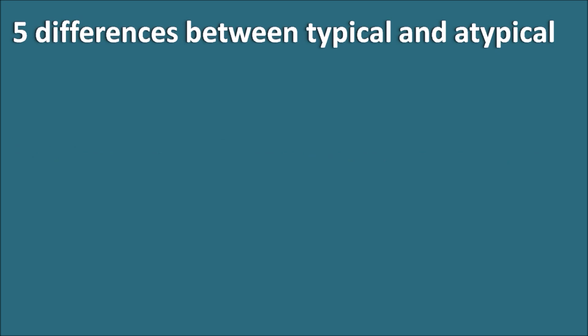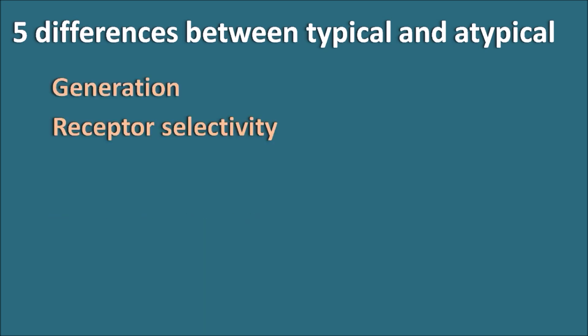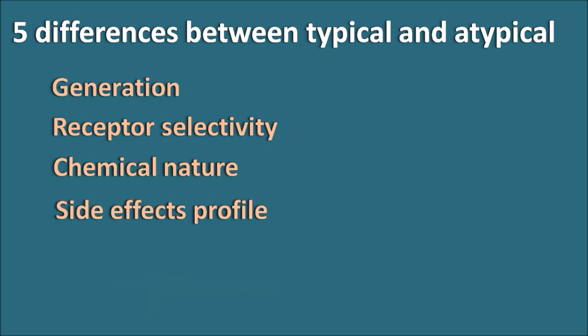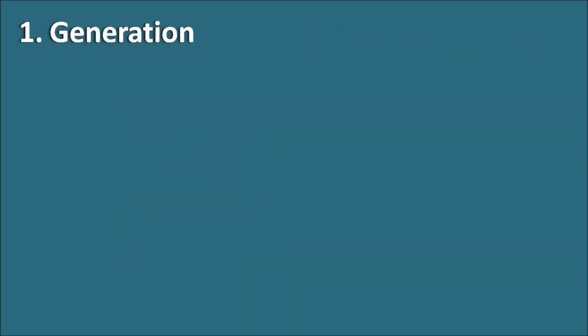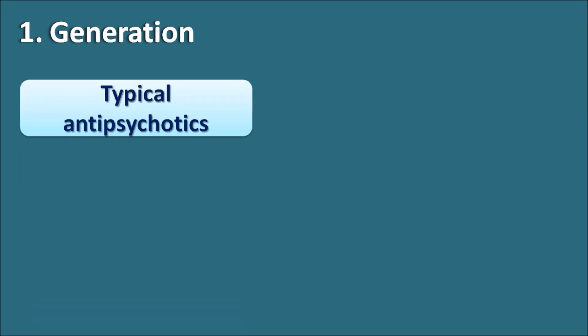Now let us see the five differences between typical and atypical antipsychotics. They differ mainly in generation, receptor selectivity, chemical nature, side effect profile, and therapeutic efficacy. Let us go through them one by one, starting with the first: generation.